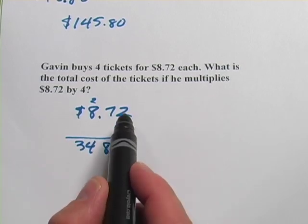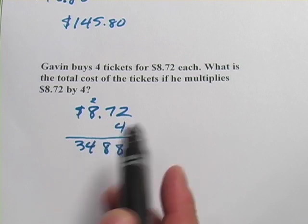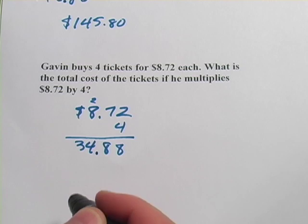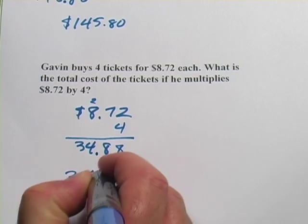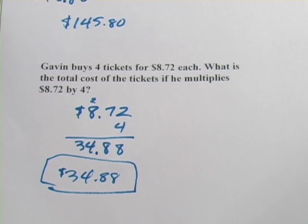And now I have to count how many numbers we had behind the decimal point. There's 2, the 7 and the 2. So I count over 2, and that is my answer. 34.88. So that is a little bit of review of multiplication.